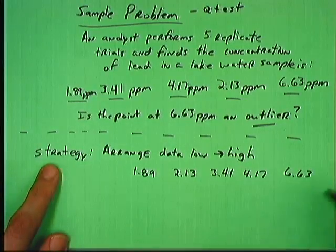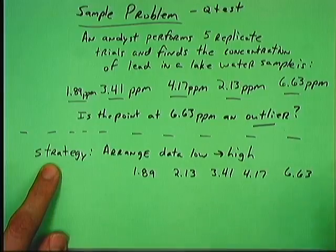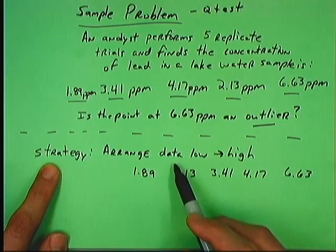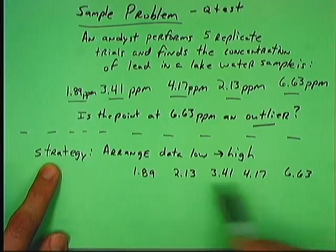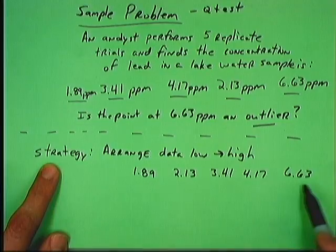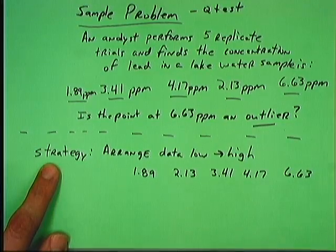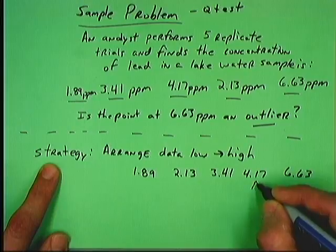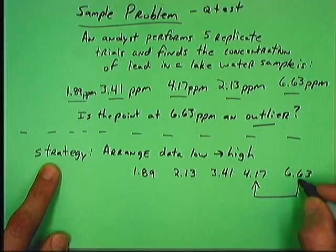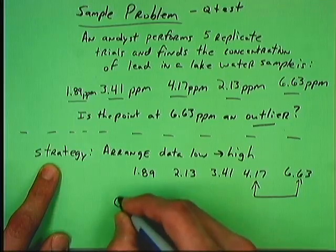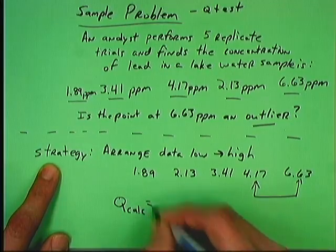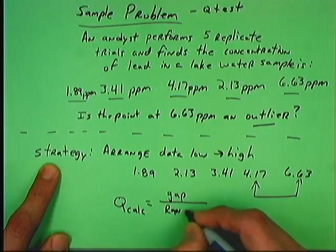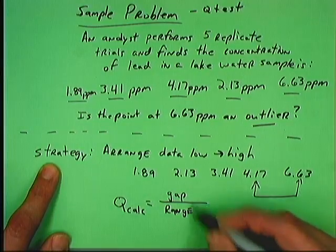When you're performing the Q-Test for detection of outliers, the first thing that you always want to do is to take all of the data points from the replicate trials, arrange them in order from low to high. So I've done that here. The lowest measurement was this. The highest measurement was this. And they increase as they go from left to right. The reason why that's crucial to your success is because it allows us to determine the key variables at play. Remember on that previous slide, I said that Q-Calc was equal to the gap divided by the range?